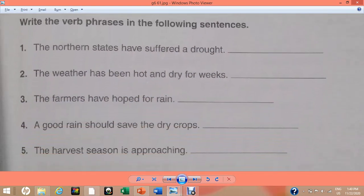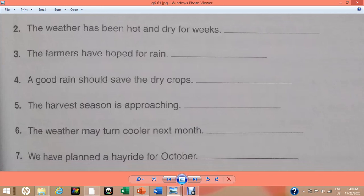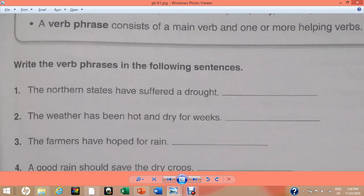On page number 61, we have 10 sentences. After reading each and every sentence, we are going to find out verb phrase in every sentence. Let's start the exercise.